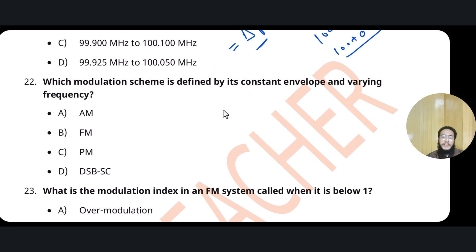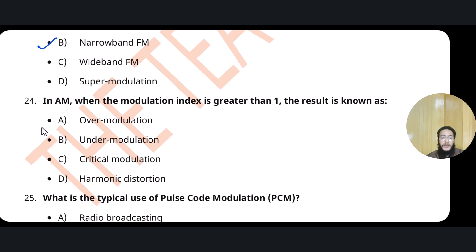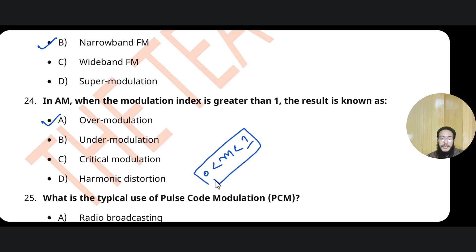Which modulation scheme is defined by constant envelope and varying frequency? That is FM — amplitude (envelope) remains constant and frequency varies. When the modulation index in an FM system is below 1, it is called narrow band FM, which requires less bandwidth. If modulation index is greater than 1, it is called an over-modulated wave. The normal range is 0 < modulation index < 1; above that is over-modulated, below is under-modulated.